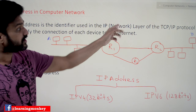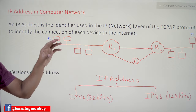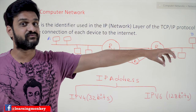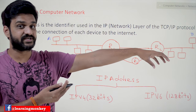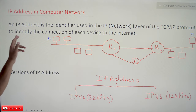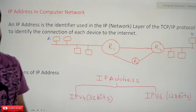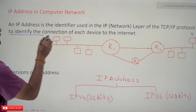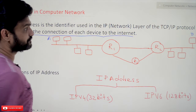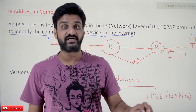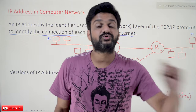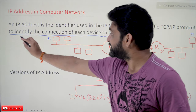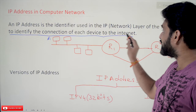An IP address is the identifier used in the IP, or network layer, of the TCP/IP protocol suite. We discussed two different types of network architectures: OSI and TCP/IP. TCP/IP is the practical implementation of OSI architecture. A very important point to understand here is that an IP address is used to identify the connection of each device to the internet — and most of the time we are under the misunderstanding that an IP address is assigned to a computer. No — it is not for the computer.